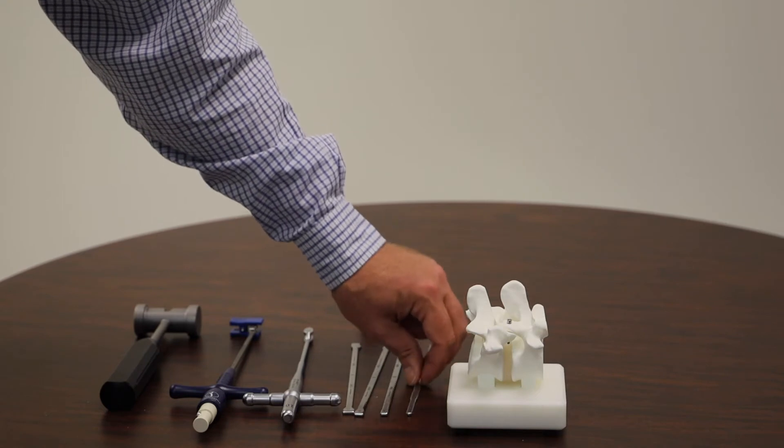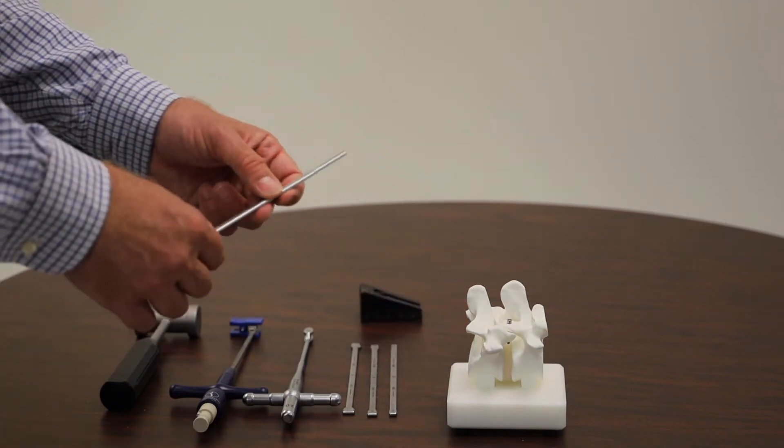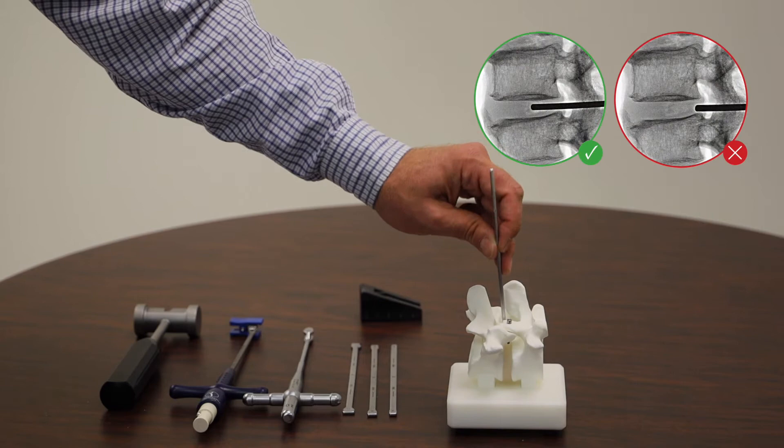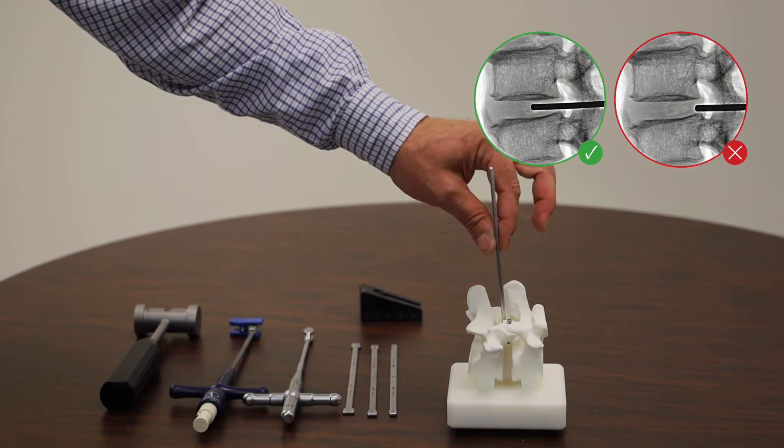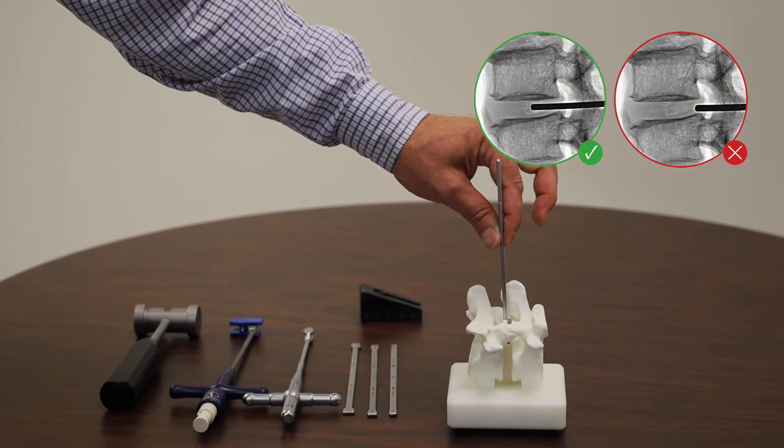Finally, we want to confirm that we have a full thickness defect. Take the smallest of the size of paddles and insert it into the annular defect and into the nuclear space. Take a lateral fluoro to confirm.